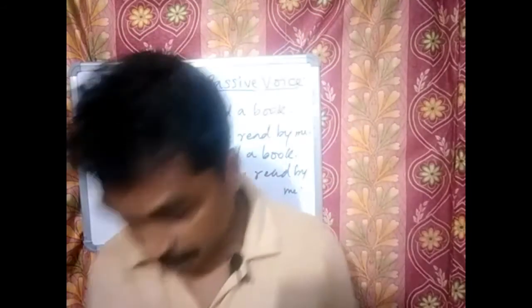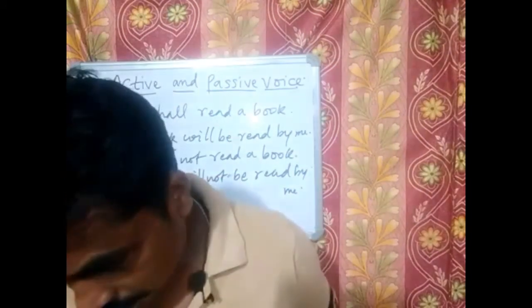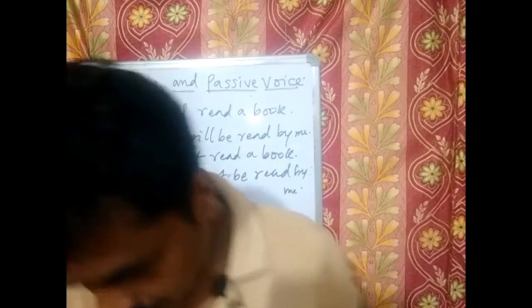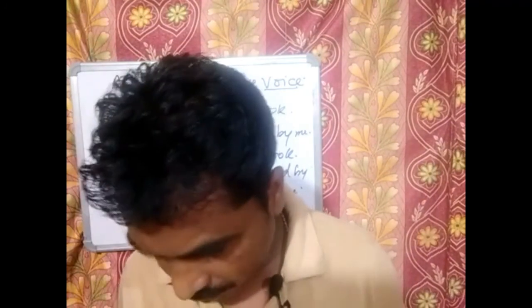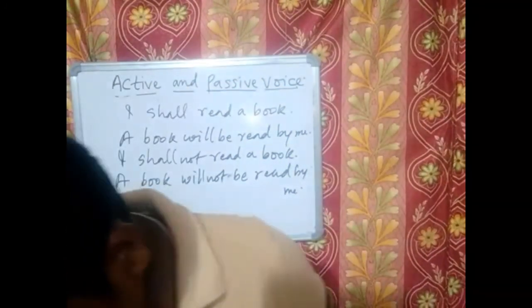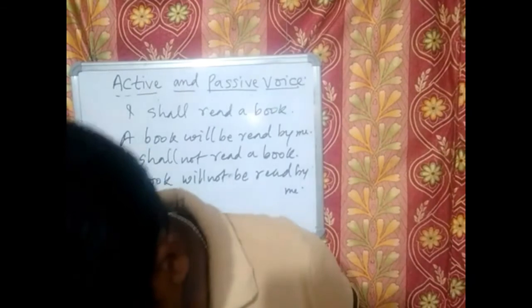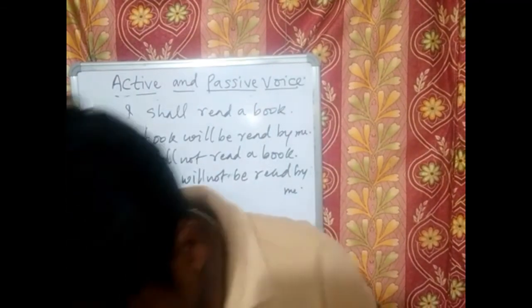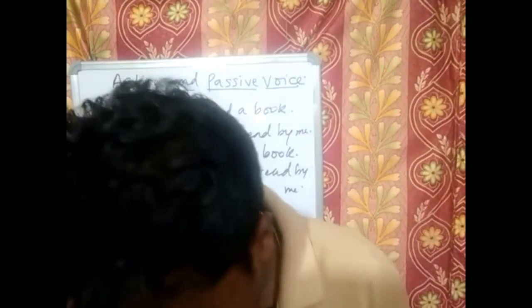That is the structure — you have to remember it. Don't make a mistake. For example, 'Will a book be not read by me?' is a wrong sentence. The correct form is: 'Will a book not be read by me?' — 'not' comes before 'be.'